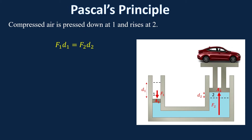There are the areas of the two pistons, a1 and a2. Because of continuity, you're pushing down a certain mass and therefore volume of air at piston one, and pushing up that same volume of air at piston two. The volume is that distance times the cross-sectional area, so the volumes of each piston are equal — a1 d1 equals a2 d2.